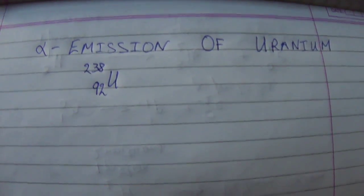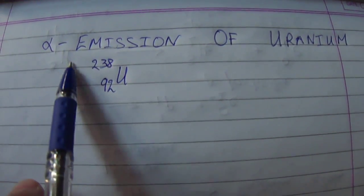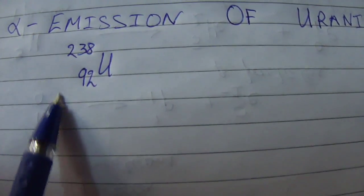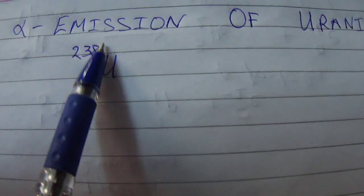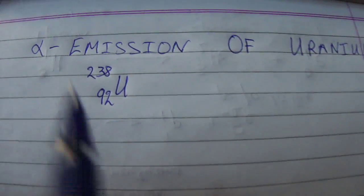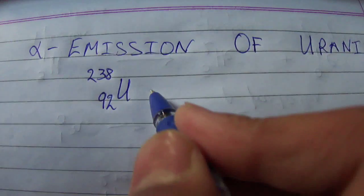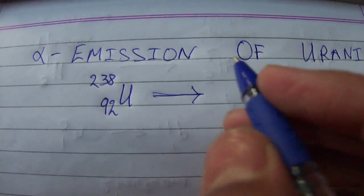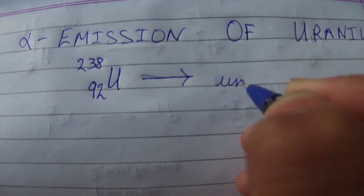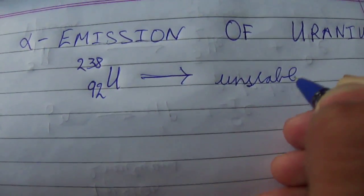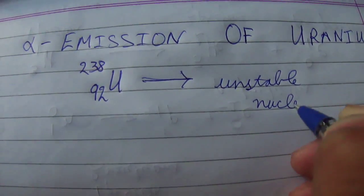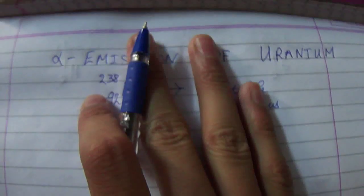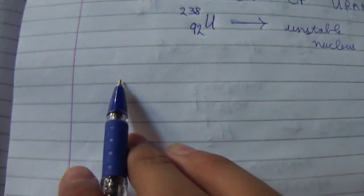In this video I am going to explain the alpha emission of uranium with atomic number 92 and atomic mass 238. This uranium nucleus is very unstable, and we will look at the alpha emission of uranium.